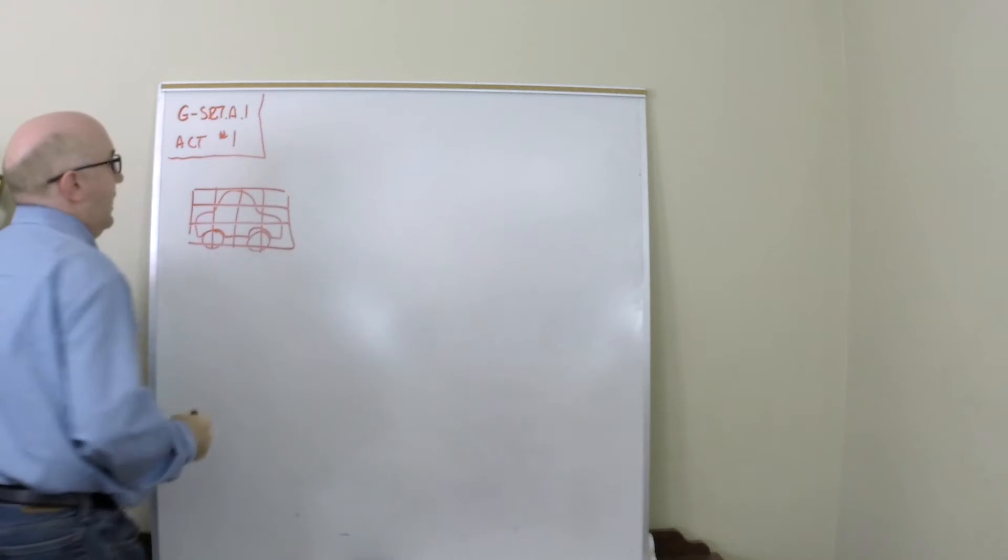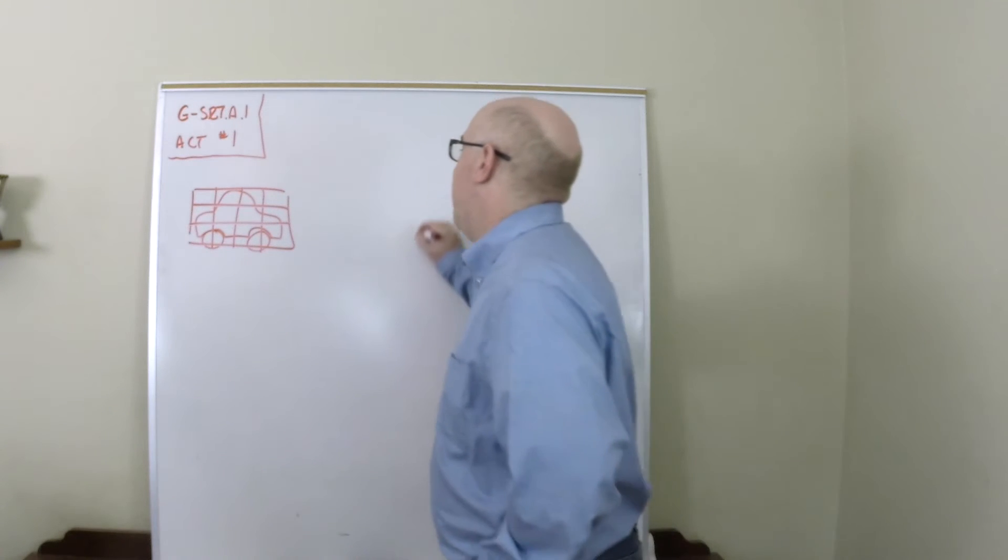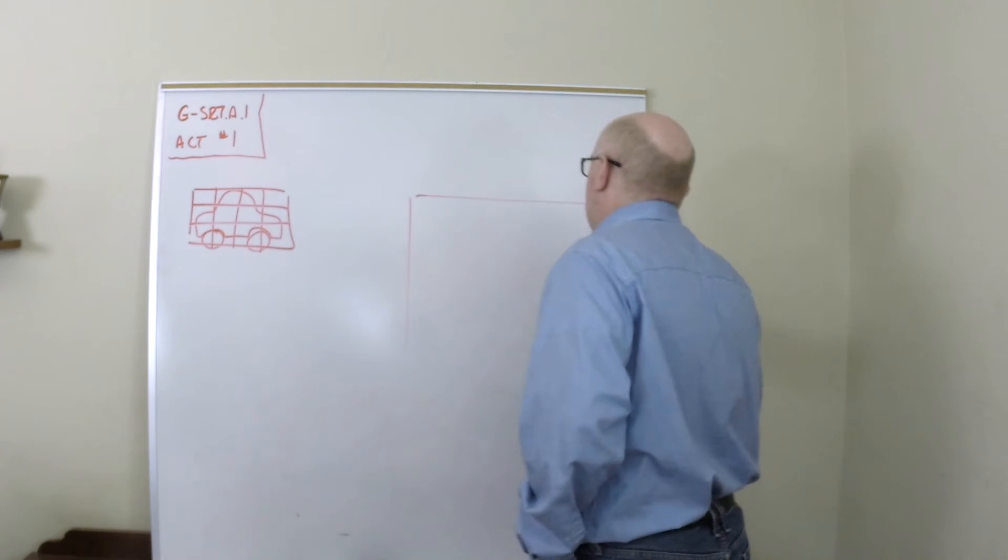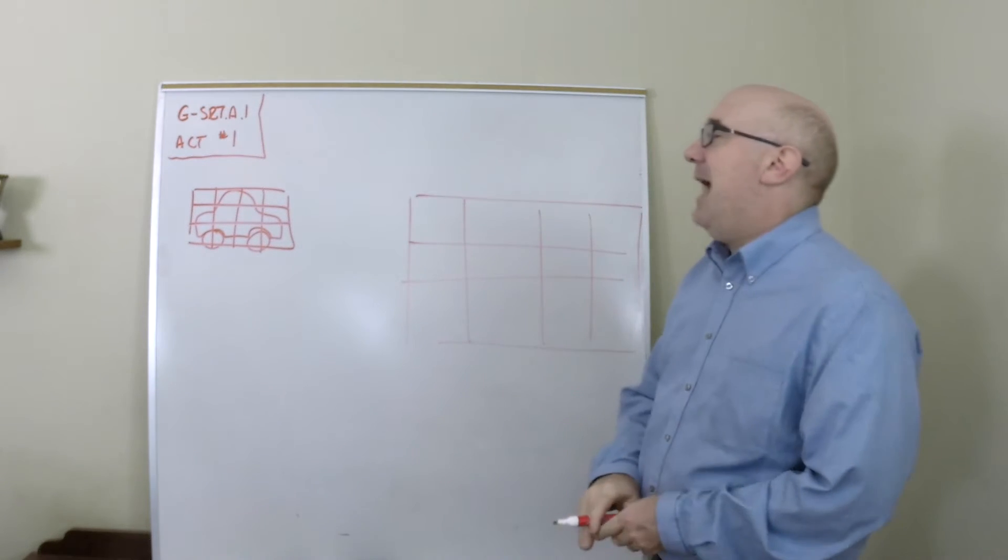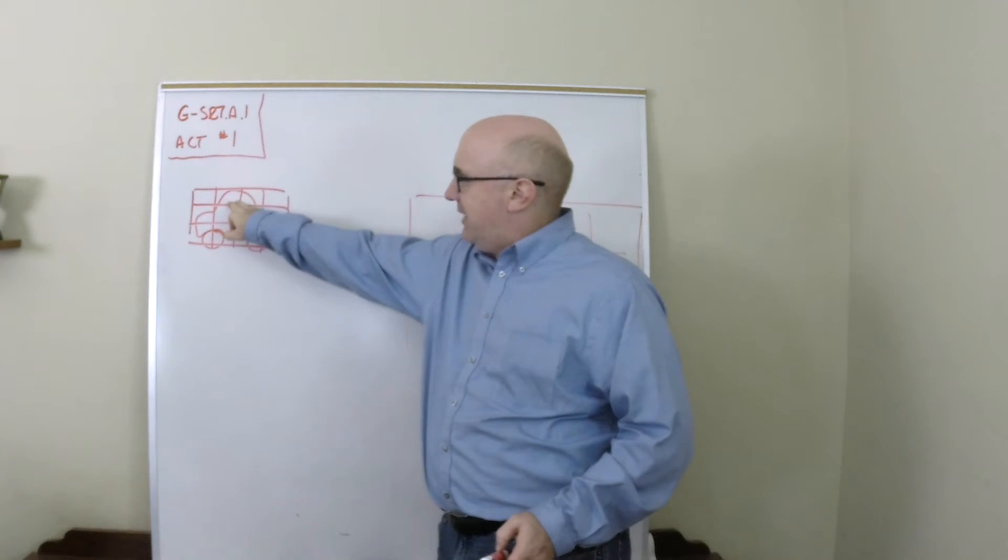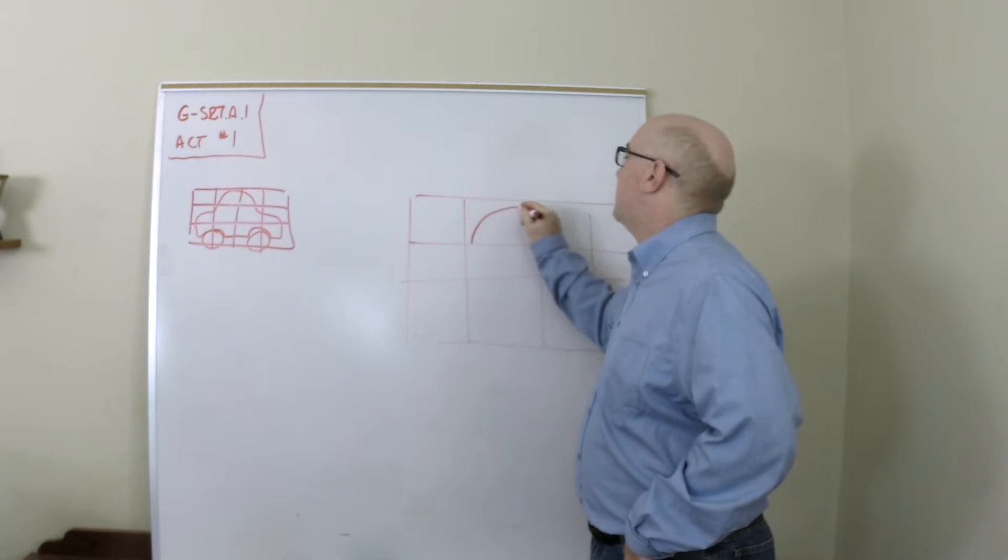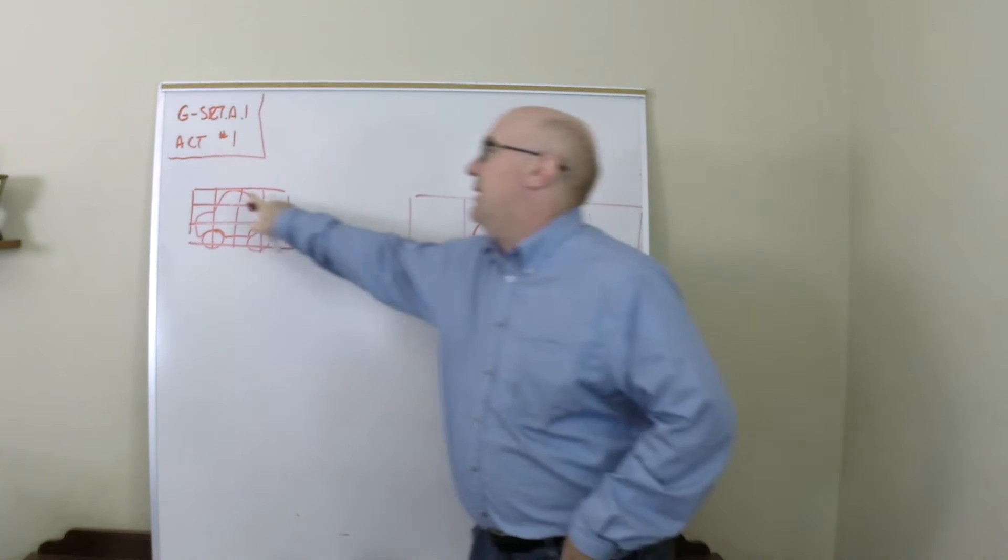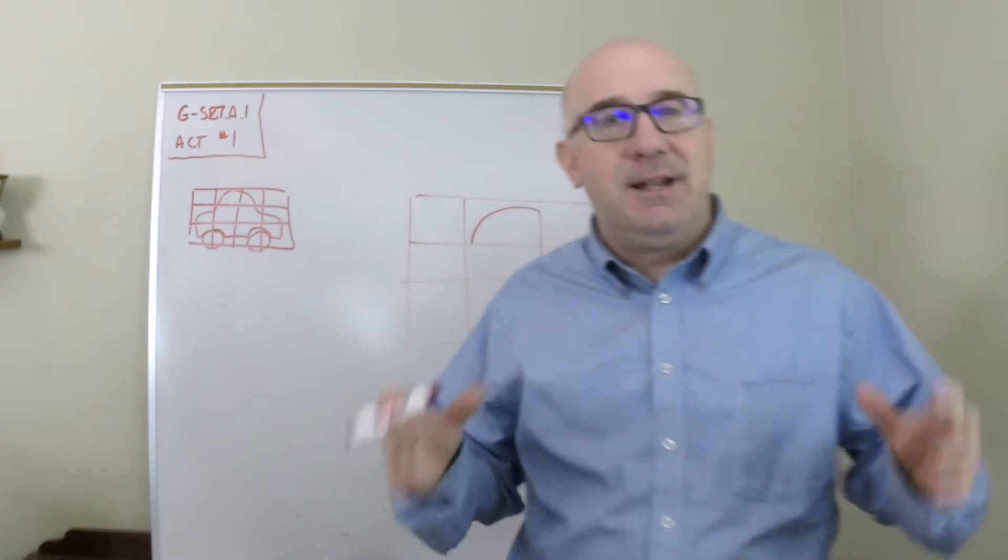Basically what he did is he made a grid inside of this object and then he went and created a proportionally large grid with the same amount of lines. Then whatever he saw in that little spot, he copied over here. So the idea would be that this would look like this.